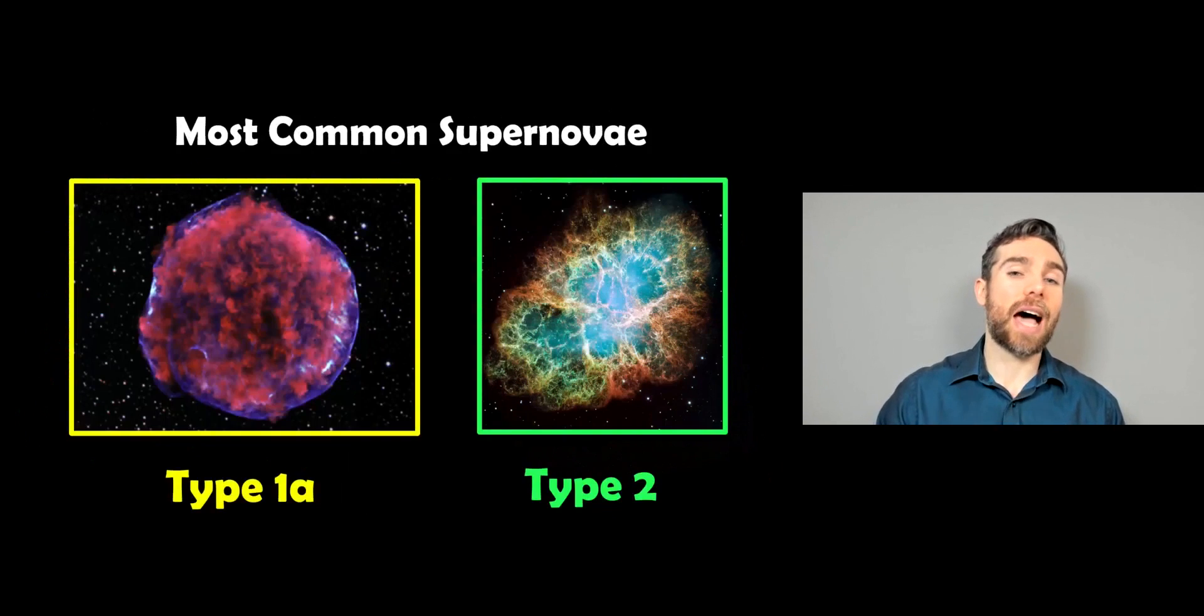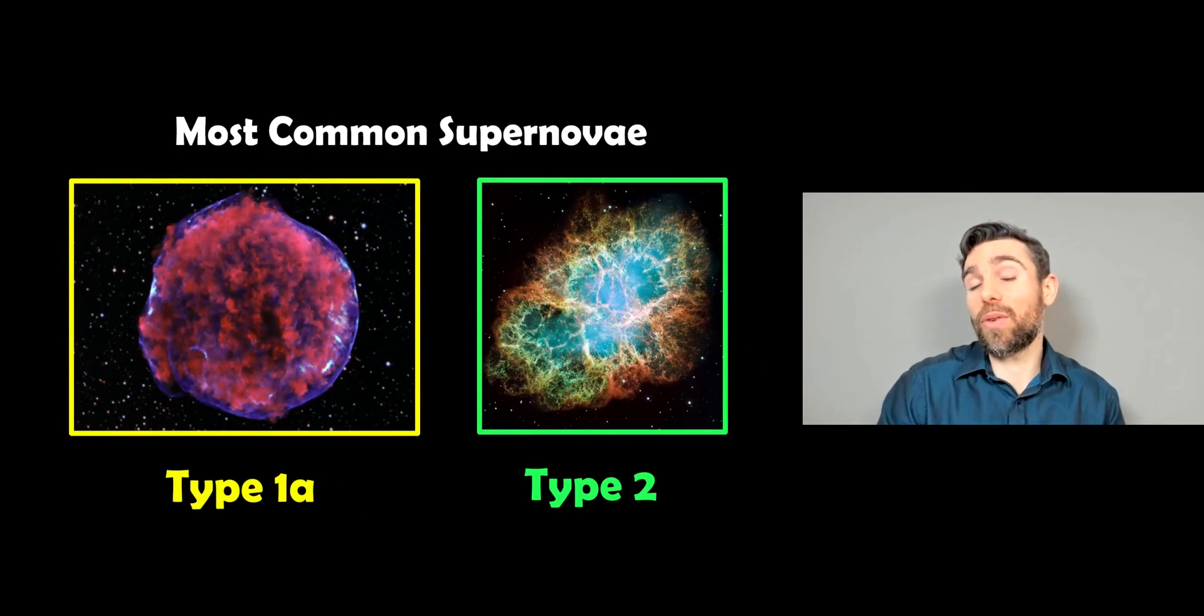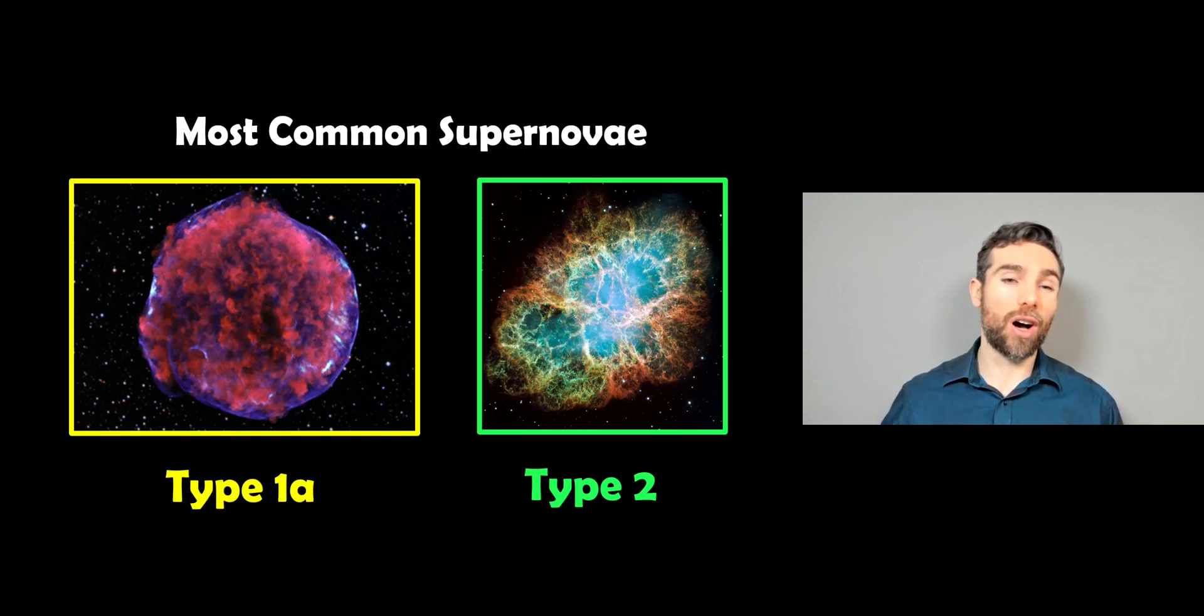Well before we do that, let's have a look at general supernovas in general, where do they come from, what are they? Well the two most common types really I suppose are ones that you may have come across before, are type 1a and type 2.